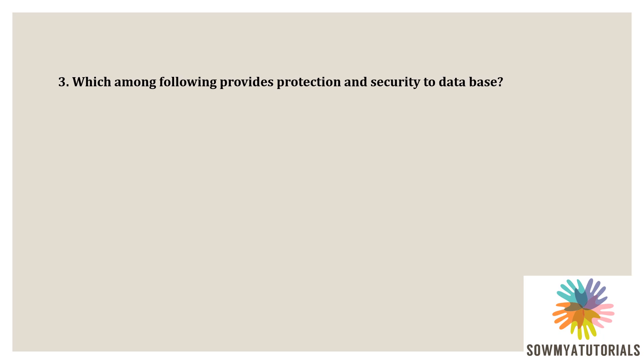Which among the following provides protection and security to a database? Options are A) C++, B) C, C) HTML, D) DBMS. The correct option is D — DBMS. DBMS is a software that provides protection and security to the database, as it allows creation, definition, and manipulation of databases and performs any kind of operations on data.